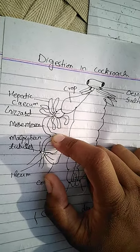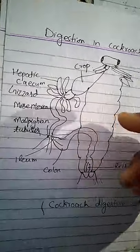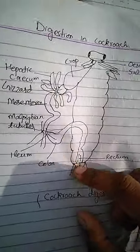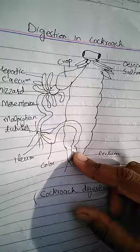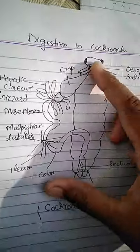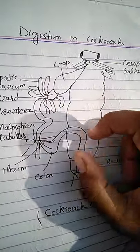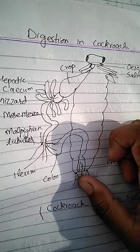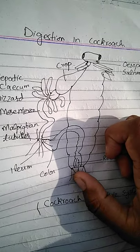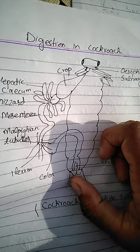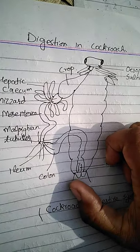The indigestible food is temporarily stored in the rectum and then removed out from the body. Cockroaches have a complete digestive tract — the mouth opening and the anal opening are separate. This is an advancement in the digestive tract.